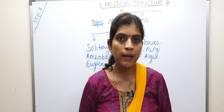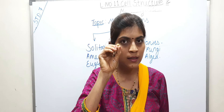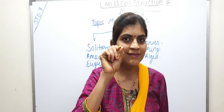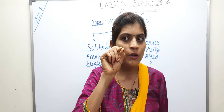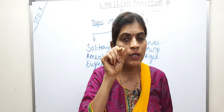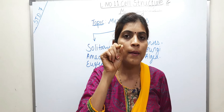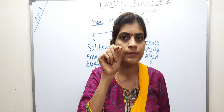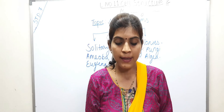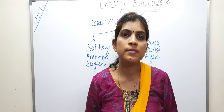Bacteria is one of the smallest microorganisms. Can you see the tip of this needle or pin? Can you guess how many bacteria it can accommodate? Well, it can accommodate millions of bacteria on just the tip of this needle. So you can imagine how small the size of microorganisms like bacteria really is.